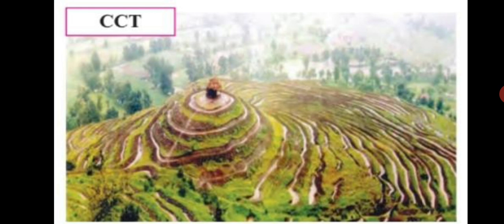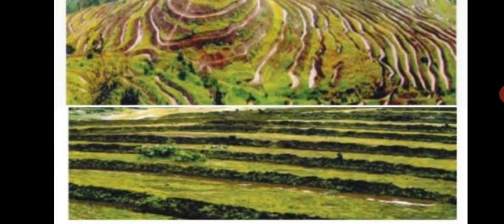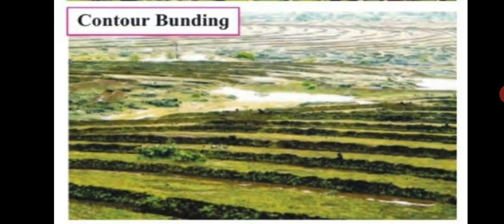The water arrested in these trenches percolates into the ground. This way, there are many steps and development programs undertaken by the government to conserve soil. Recently, the government launched the scheme called Jalyukta Shivar. Under this scheme, works like construction of farm bunds, arresting waters of small streams, and connecting streams are being carried out on a large scale.